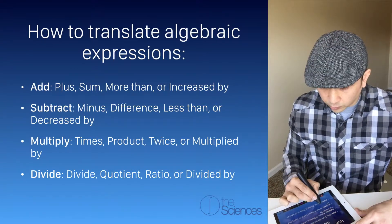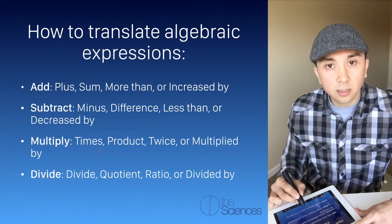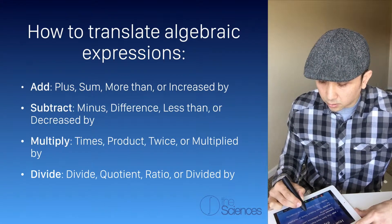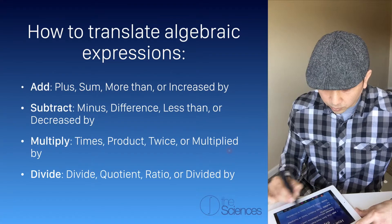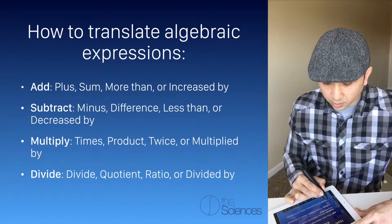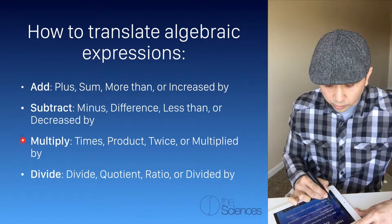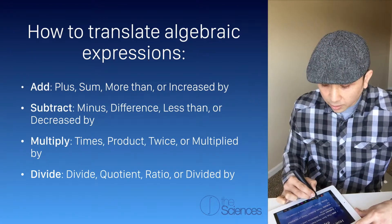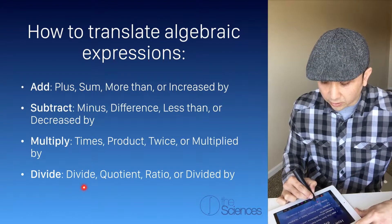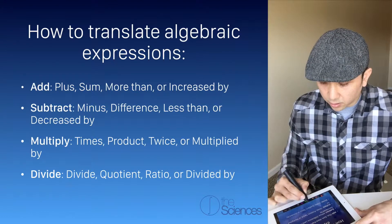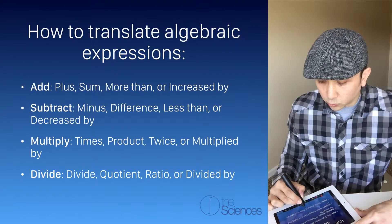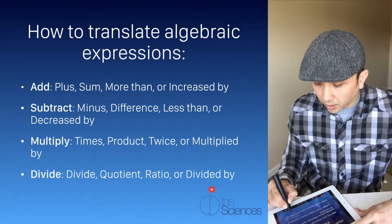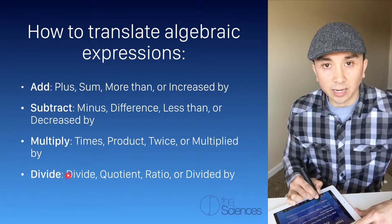When we see the words times, product, twice, or multiplied by, we know we're going to multiply. And anywhere we see divide, quotient, ratio, or divided by, we're going to divide.